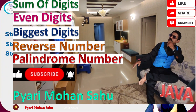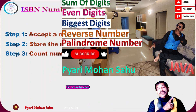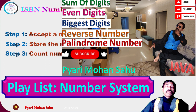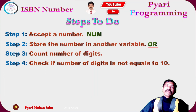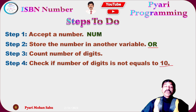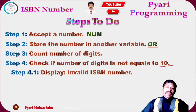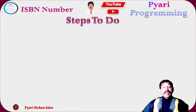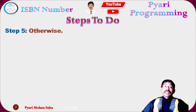Next, count the number of digits. Then check whether the digit count equals 10 — the first criteria of an ISBN number. If it is not 10 digits, it is an invalid ISBN number and no further operations are needed.